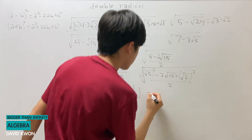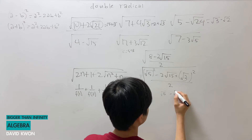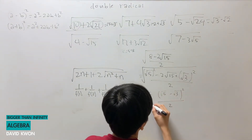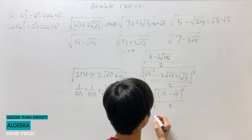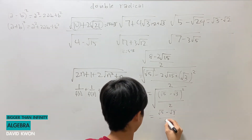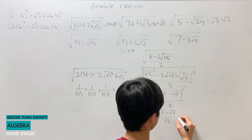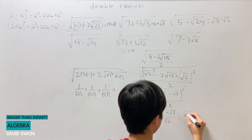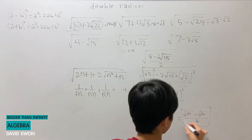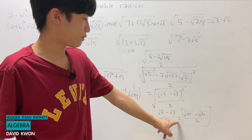We have the root, and this can simplify into square root of (square root of 5 minus square root of 3) squared over 2, with the outer root. This is equal to (square root of 5 minus square root of 3) over square root of 2. We can simplify this further. The answer is either that form or rationalized, but most teachers would prefer it without a radical in the denominator.